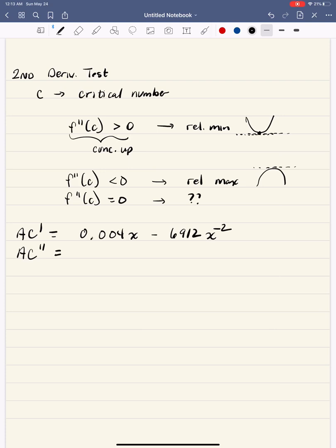Okay, so if I take my second derivative, which is the derivative of the first derivative, first term becomes 0.004. Now when this negative two comes down, that becomes a plus. And now that is 13,824, so 13,824 X to the negative third. And if I substitute my 120 in there,